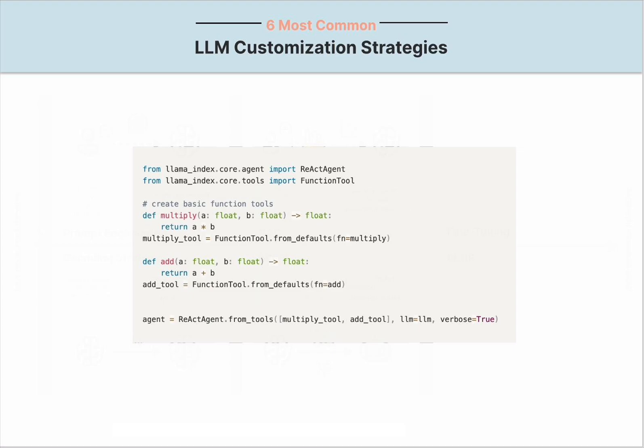The advantages of an agentic workflow are more substantial when combined with self-reflection or self-correction, and it is an increasingly growing domain with a variety of agent architectures being explored. For instance, the reflection framework facilitates iterative learning by providing a summary of verbal feedback from the environment and storing the feedback in the model's memory. The Critic framework empowers frozen LLMs to self-verify through interacting with external tools such as code interpreter and API calls.